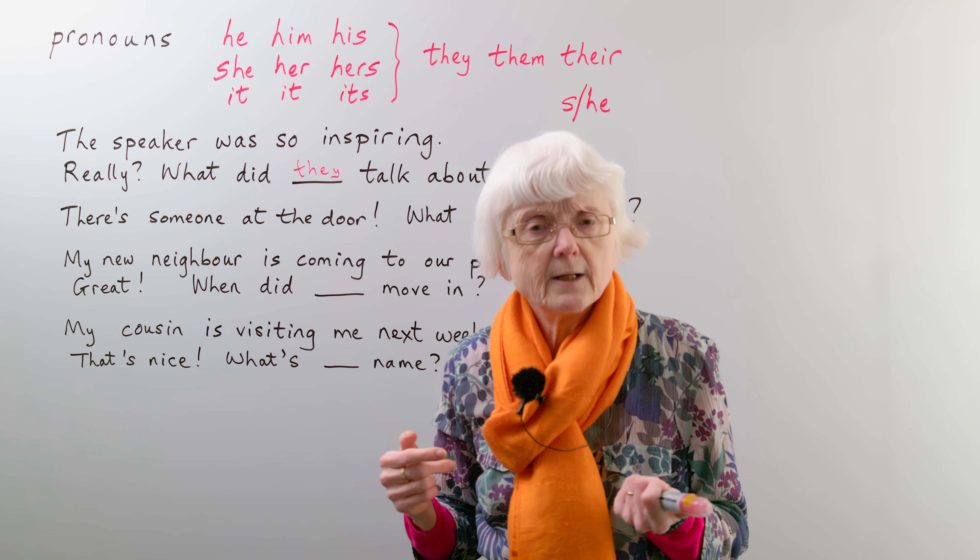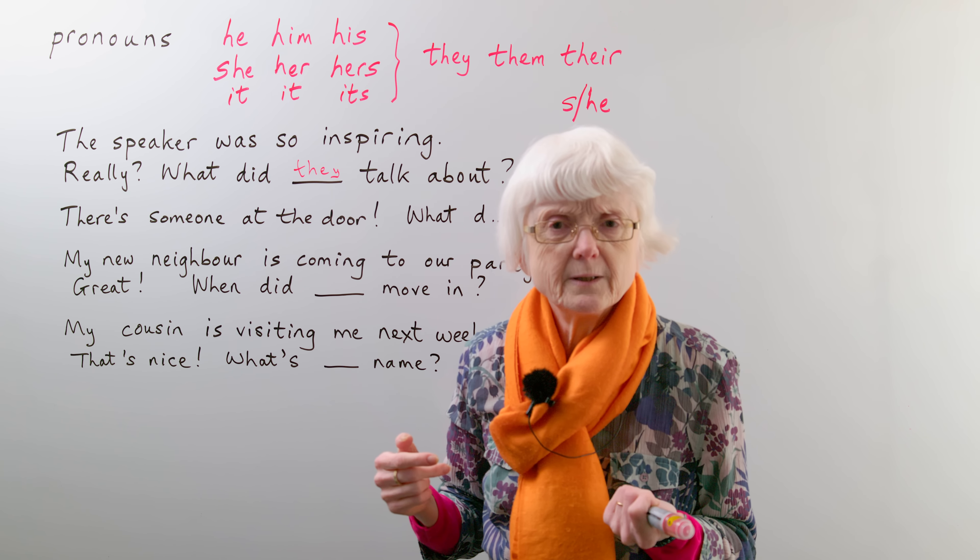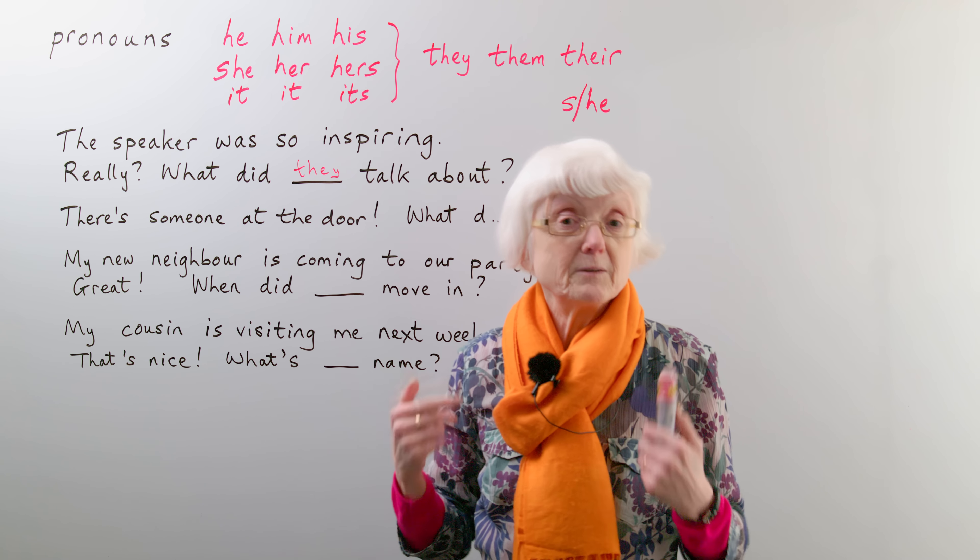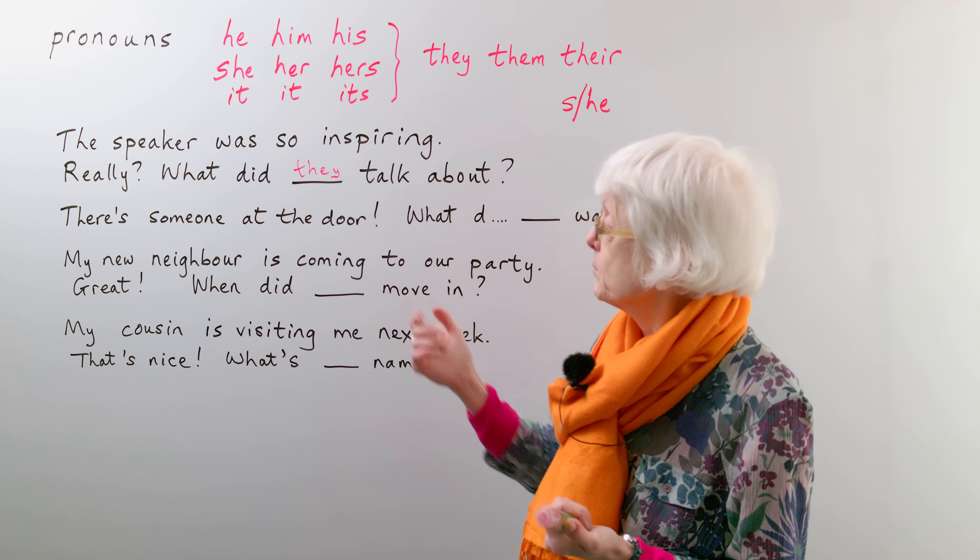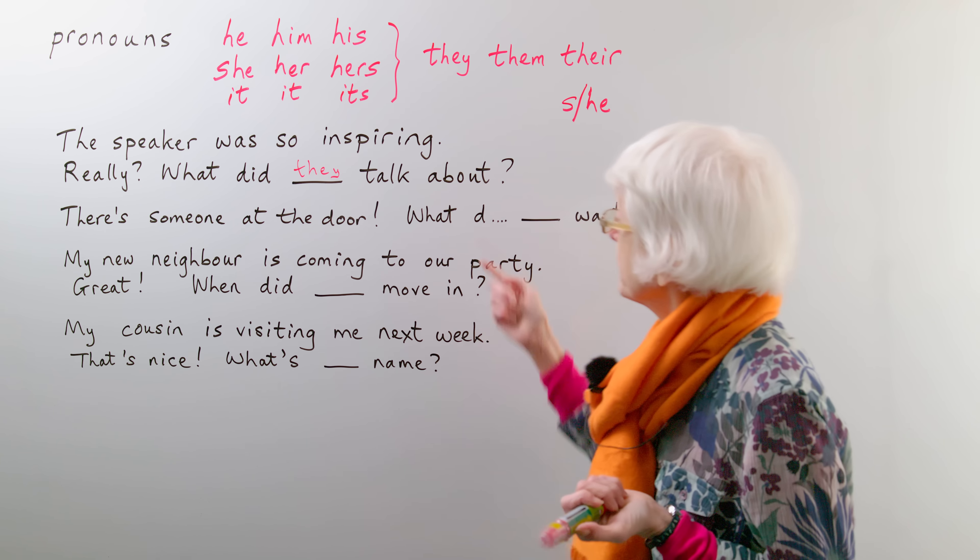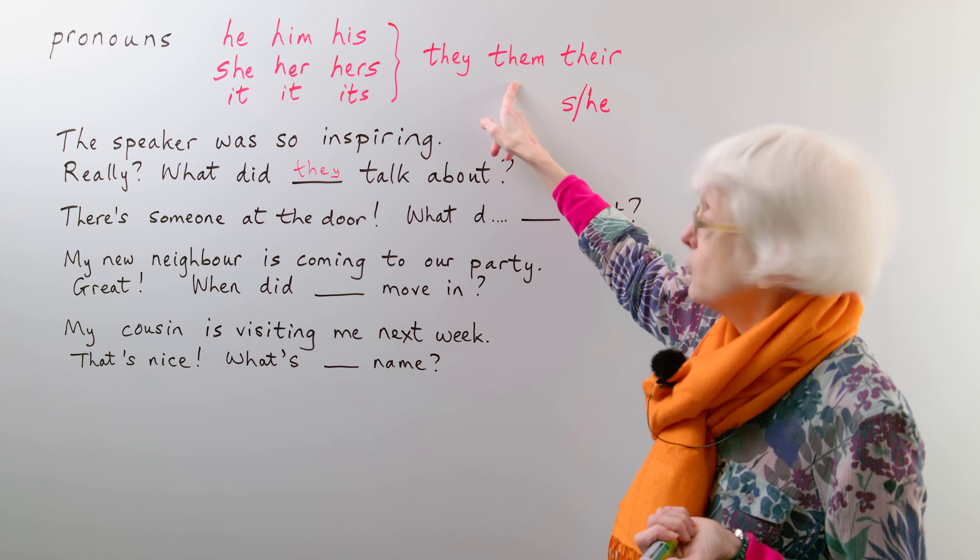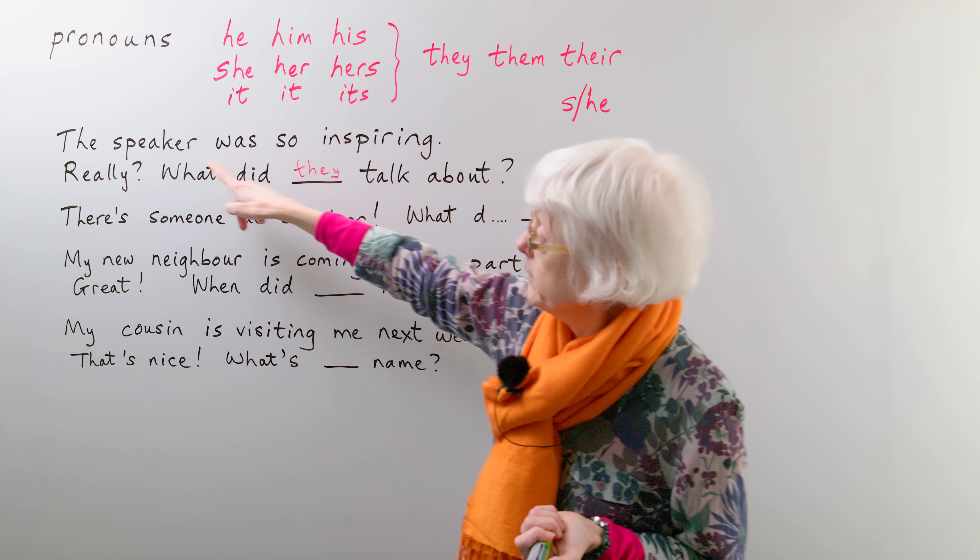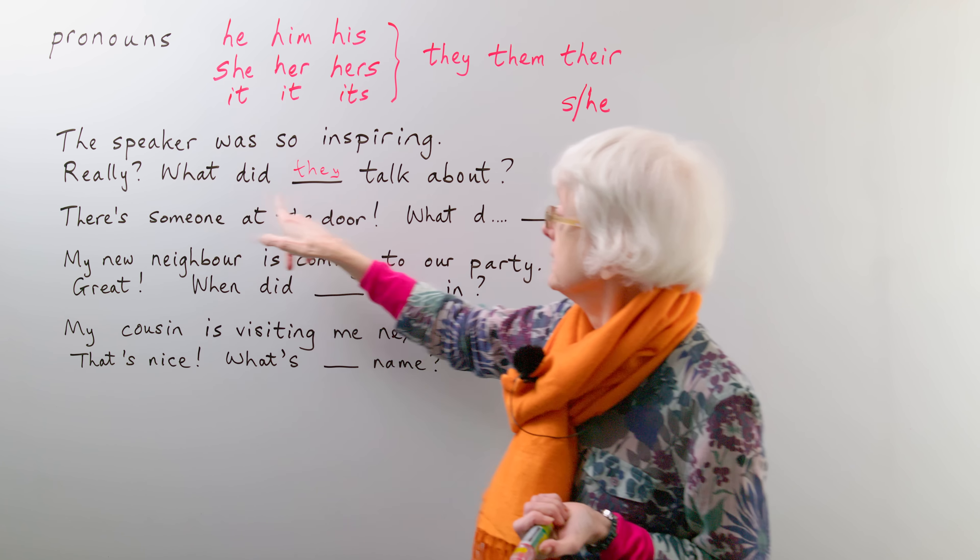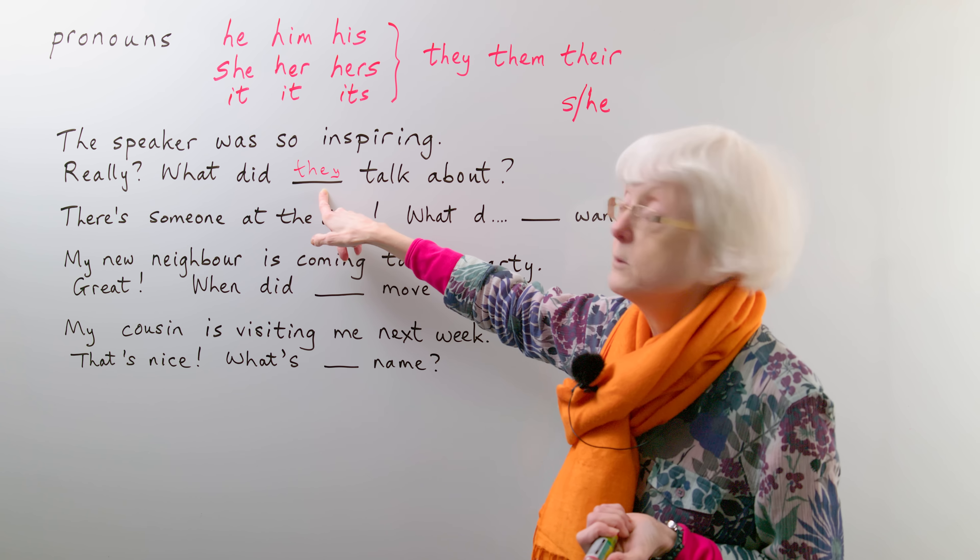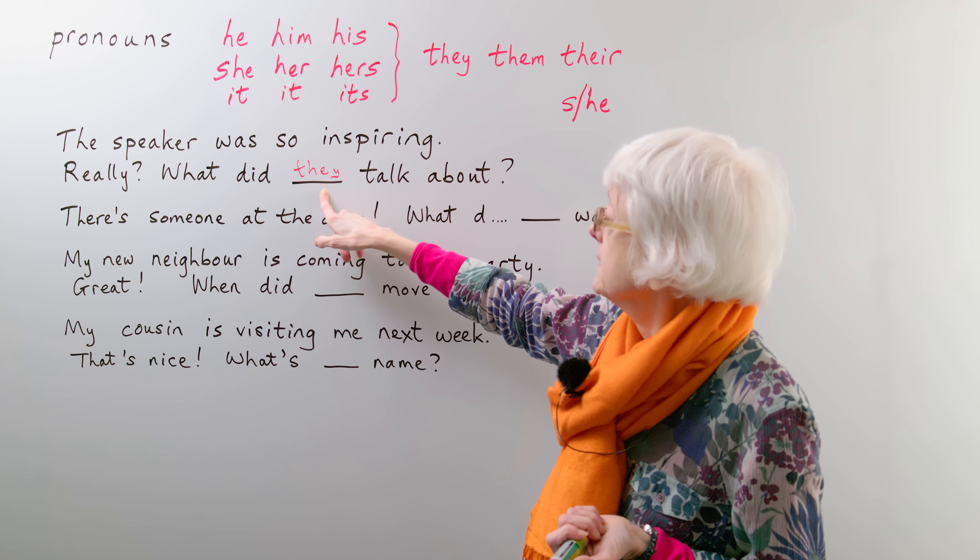So it's an easy way of asking the question or referring to that speaker when you don't know if they're male or female. You don't really want to say, oh, was it a man or a woman before you can ask the question, what did he talk about or what did she talk about? You want to immediately ask the question, oh, what did they talk about? So that's when you would use the plural, they, when you know it's only one person, one speaker, because you just don't know who they are.